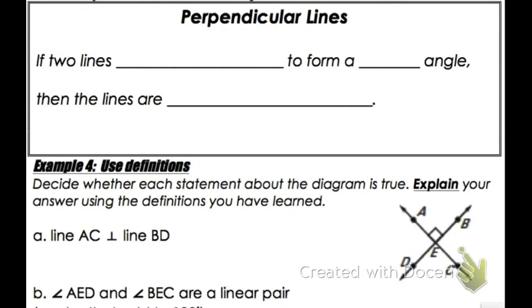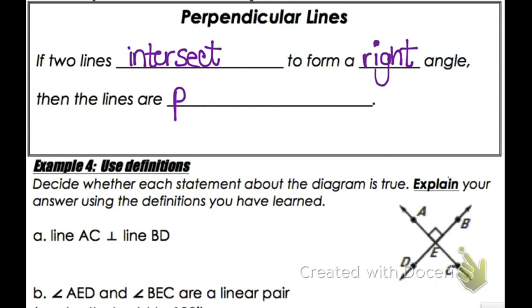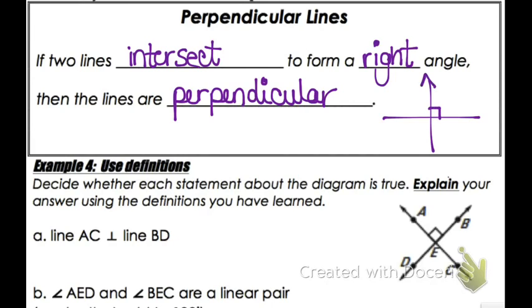Here's our last idea for today: perpendicular lines. If two lines intersect to form a right angle, then we say those lines are perpendicular. That's a really important concept and an important word to get used to using.